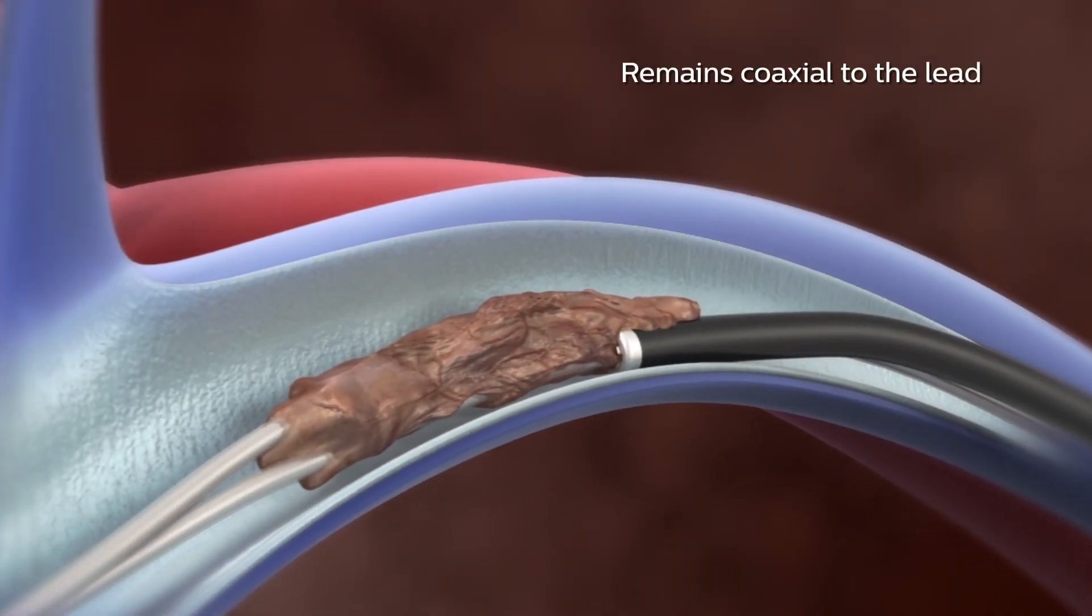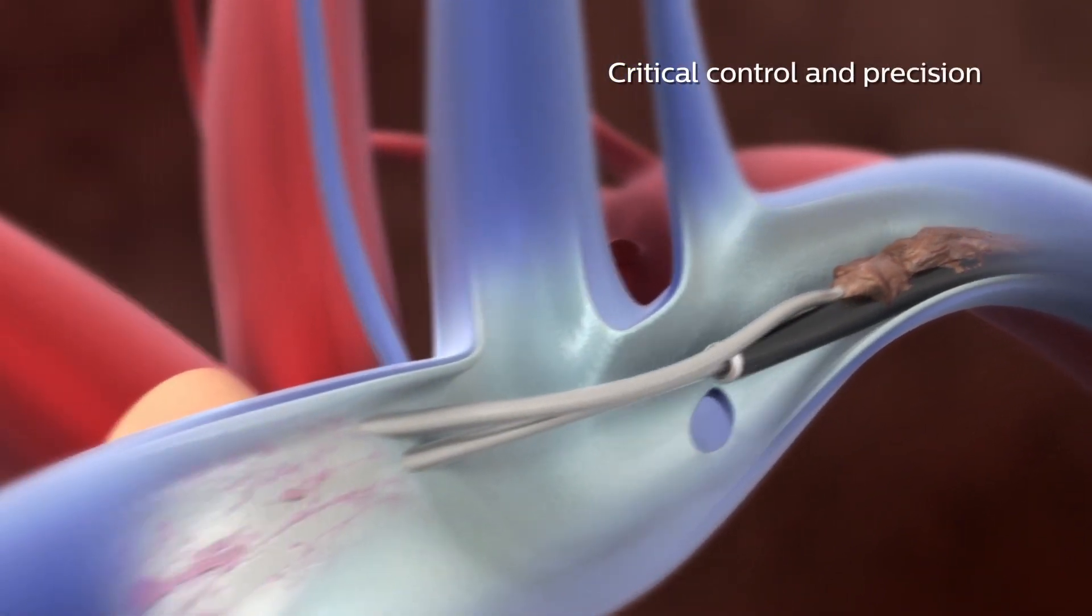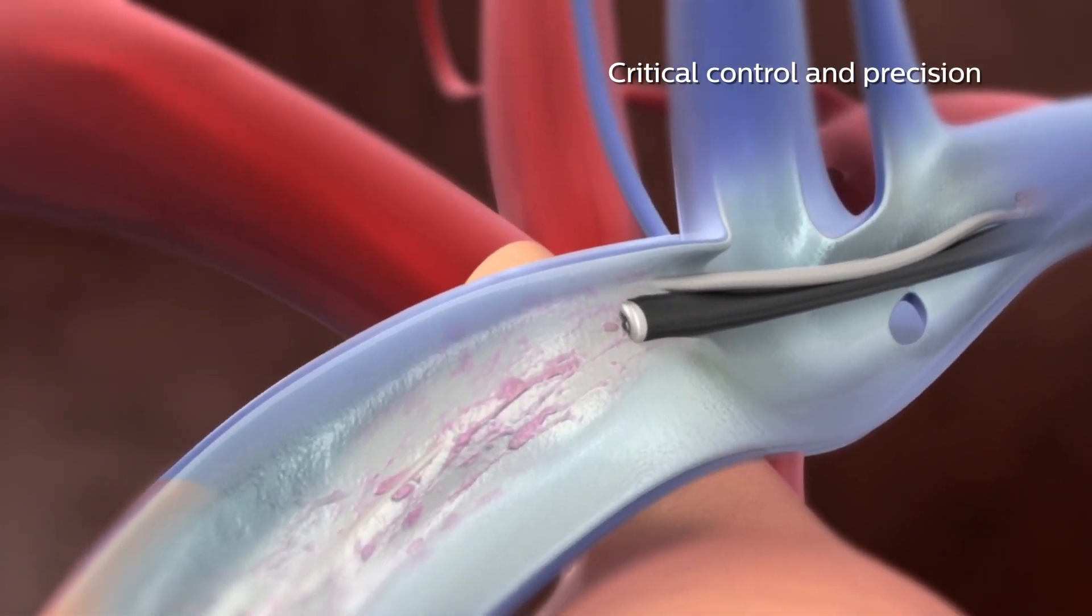Tightrail's flexibility helps the device remain coaxial to the lead. With its flexibility, shielded blade, and static shaft,